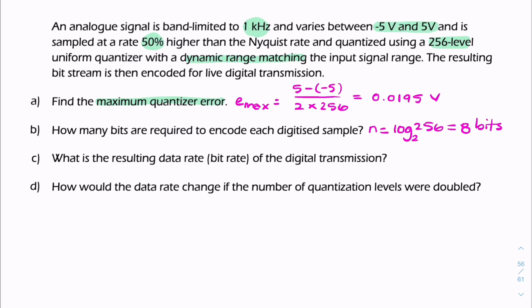The next question asks for the resulting bit rate. So we have a sampler followed by a quantizer. The sampler produces Fs samples per second. And the quantizer produces N bits for every sample. So the bit rate is just the product of the two.